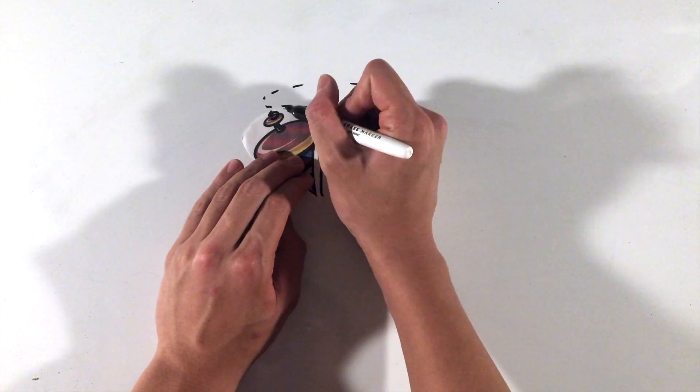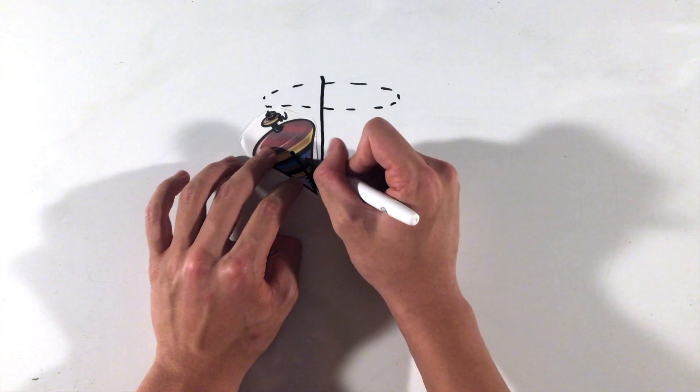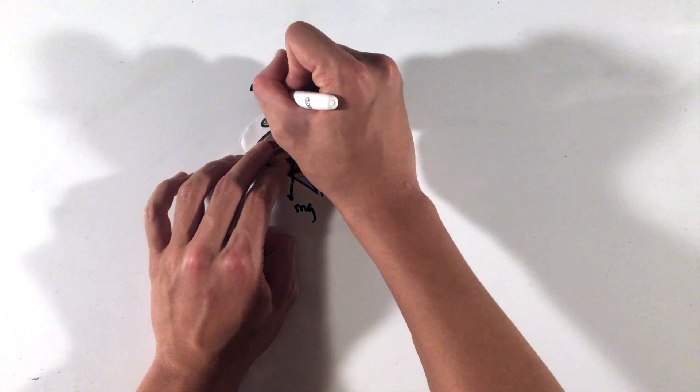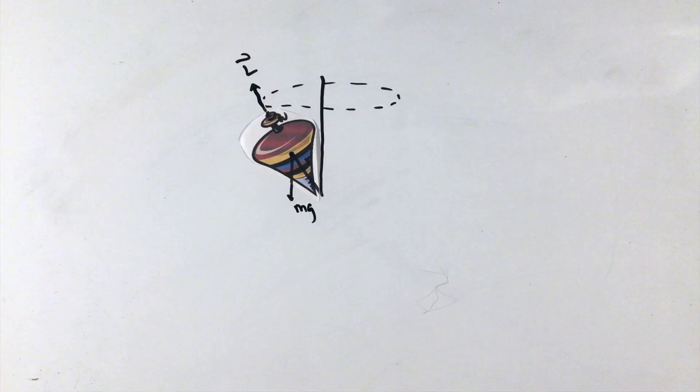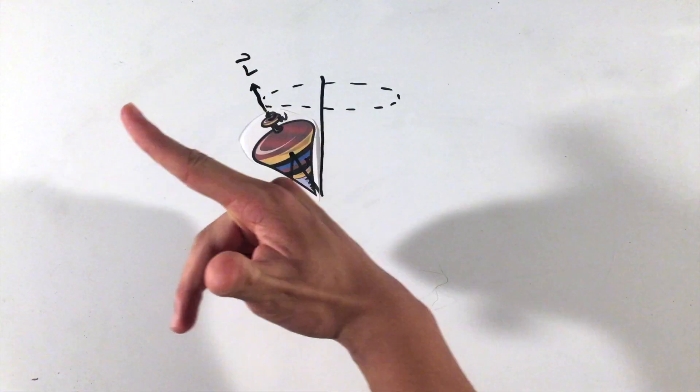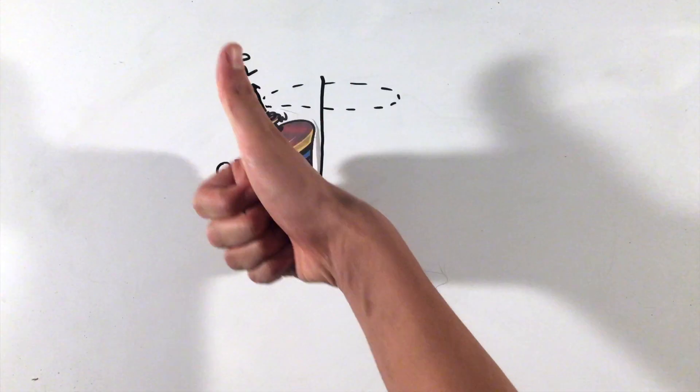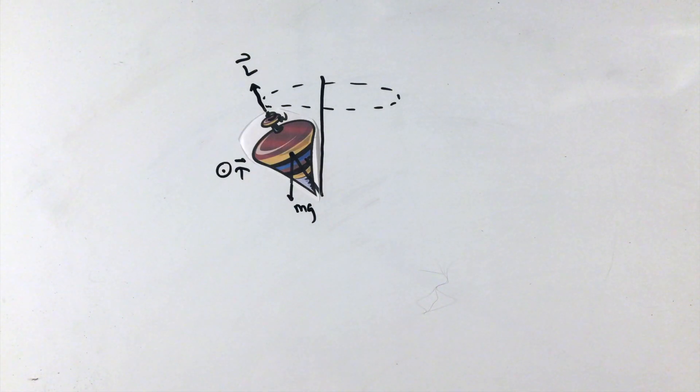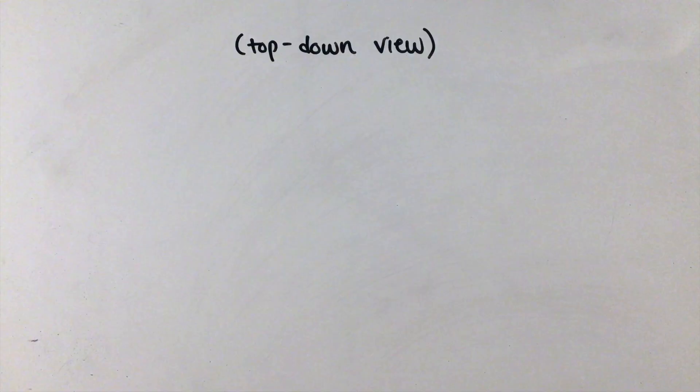Qualitatively, objects like this spinning top precess because the torque on the object tries to change the angular momentum as discussed before. Assuming these arbitrary lengths and masses, using our angular momentum equation and right-hand rule from earlier, the L vector would point diagonally in this direction here. Essentially, this torque vector tugs on the angular momentum vector, changing its direction without changing the magnitude.